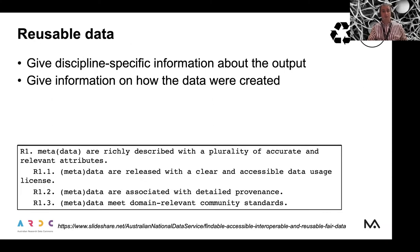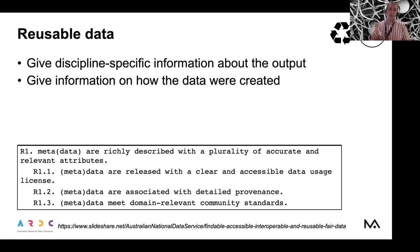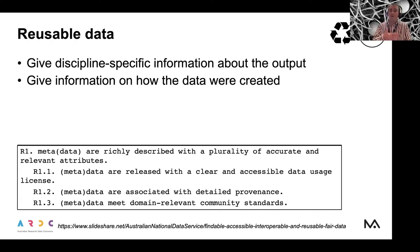Reusable data — the things you need to care about are giving discipline-specific information about the output. If you have data coming out of an experiment, it may be good to know the setup of the experiment — for example, the temperature, the nature of the sample used, and how the data were created: which software you used, which version, maybe which settings. All of that information is very useful — if someone wants to reuse your data, they have to know where the data came from.